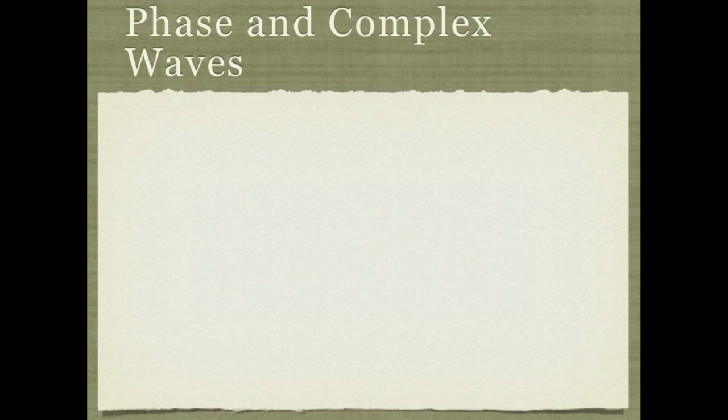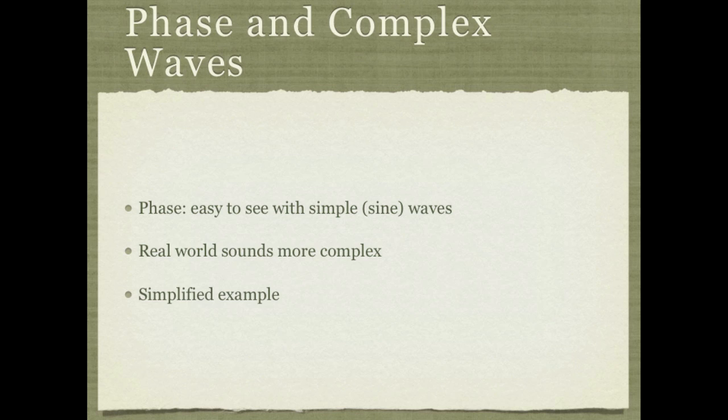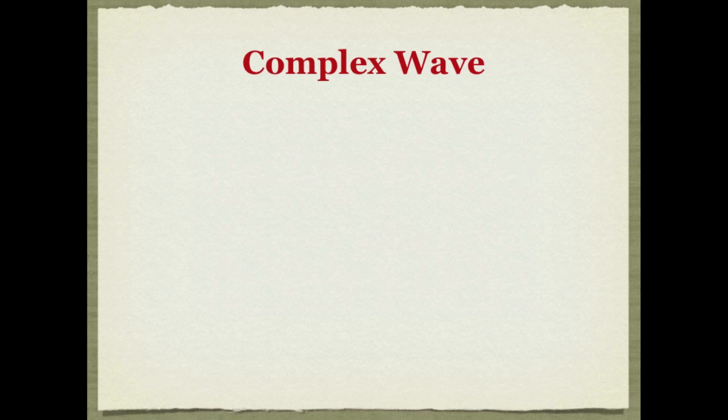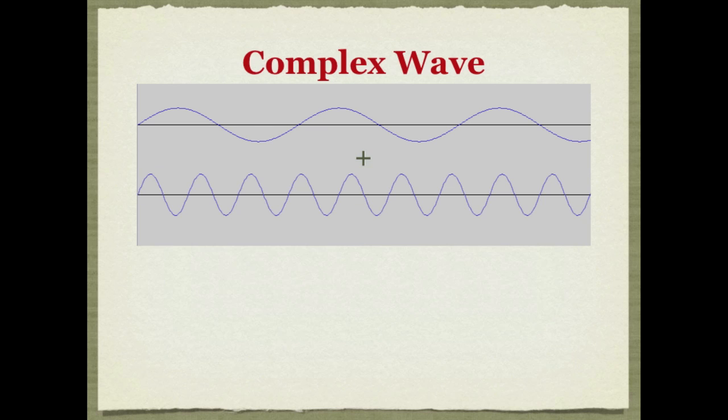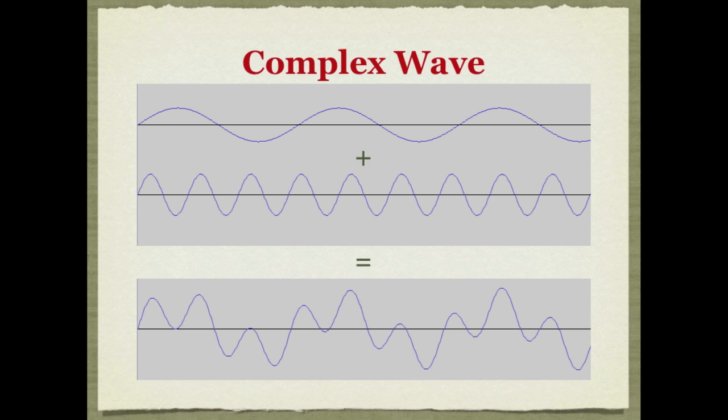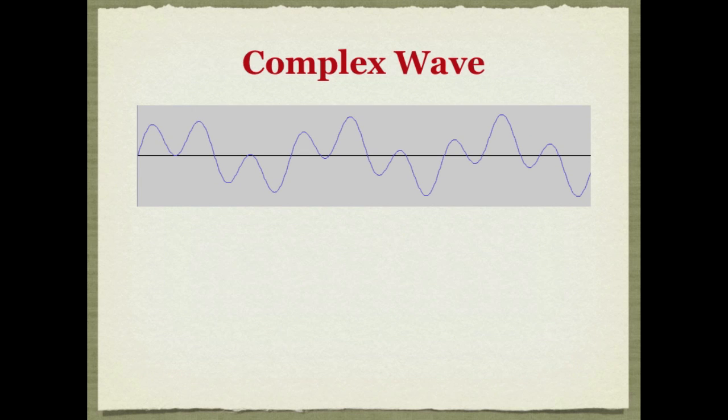As we went through just now, phase is easy to see with simple waves that only have one frequency. Real-world sounds, of course, have thousands of frequencies coming and going at various times, and it becomes much more complicated. Let's start with the simplest of complex waves. Here's a wave that has two ingredients, a low frequency and a higher frequency wave. And when they're combined, it looks like this. So let's use this complex wave as the basis of our experiment with different frequencies having different phase relationships.